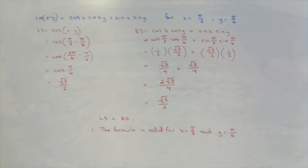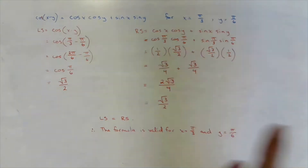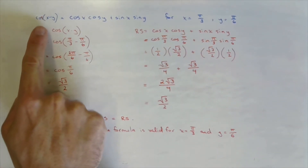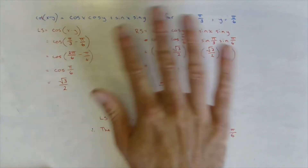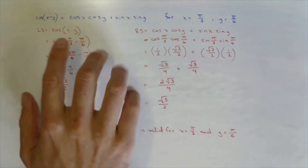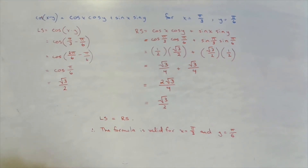If I pick any two specific x and y values and use the subtraction formula for cosine, would the left side end up equaling the right side? Yes — nice.